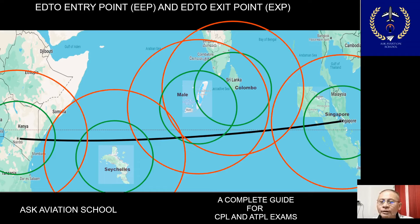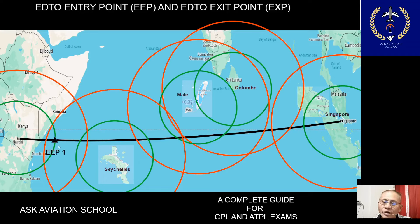Now let us see what happens when the aircraft flies from Nairobi to Singapore. The aircraft gets airborne from Nairobi and, as it continues to fly, crosses the first circle drawn using the distance corresponding to 60 minutes of flight time. From this point the aircraft commences the EDTO segment, as it is going beyond the 60-minute threshold time. This point is known as the EDTO Entry Point, written as EEP, and since it is the first occurrence on this route it is designated EEP1.